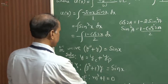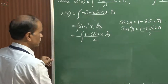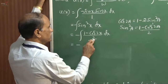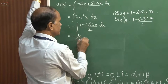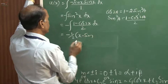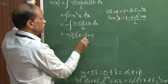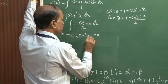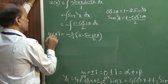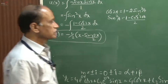Writing the solution for ux: it equals minus one half times x minus sin 2x divided by 2. So ux equals minus one half times the quantity x minus sin 2x over 2. This is the solution for ux.